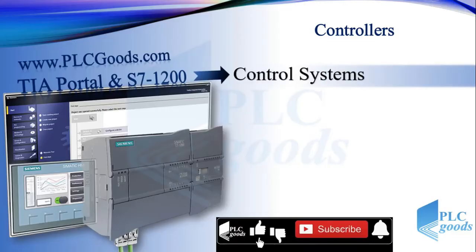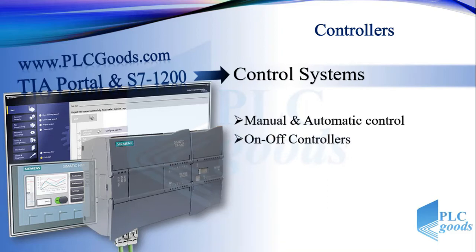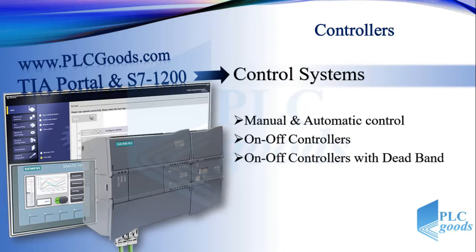In this video we start learning basic controllers which can be used in industrial processes. First we'll have a short introduction to manual and automatic control, then we'll see what is an on-off controller and its problem, so we will need to use an on-off controller with dead band. These controllers need digital devices which have two states: on or off. On the other side, if analog devices are used, we can have PID controllers.